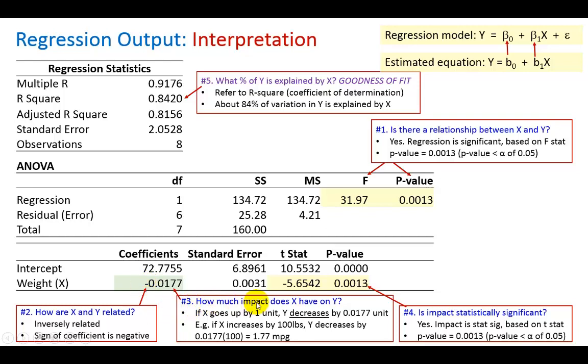Number three how much impact does X have on Y? Well that's based on this number right here, the numerical evidence. As you can see it has a negative sign.